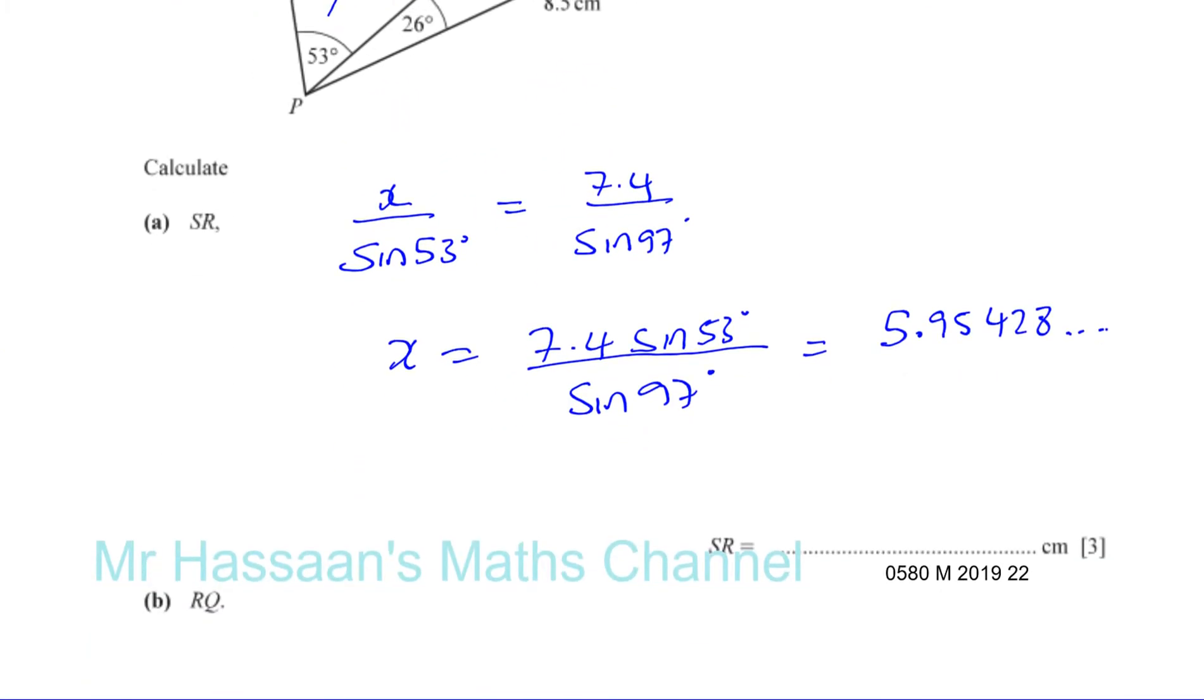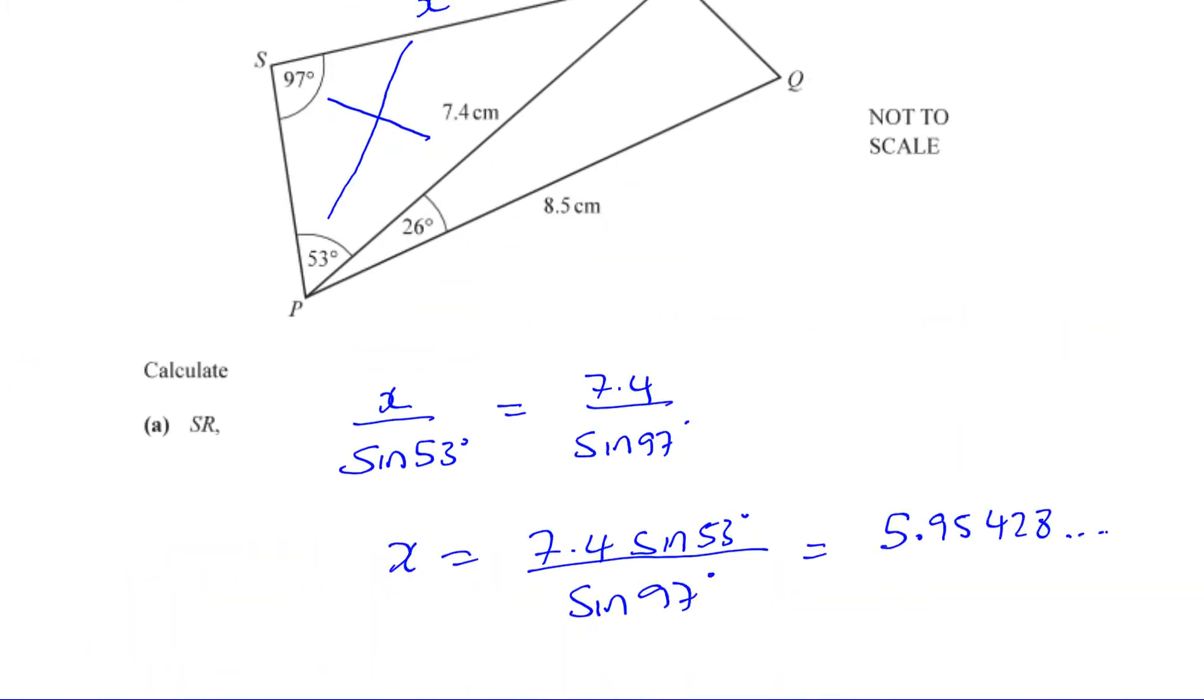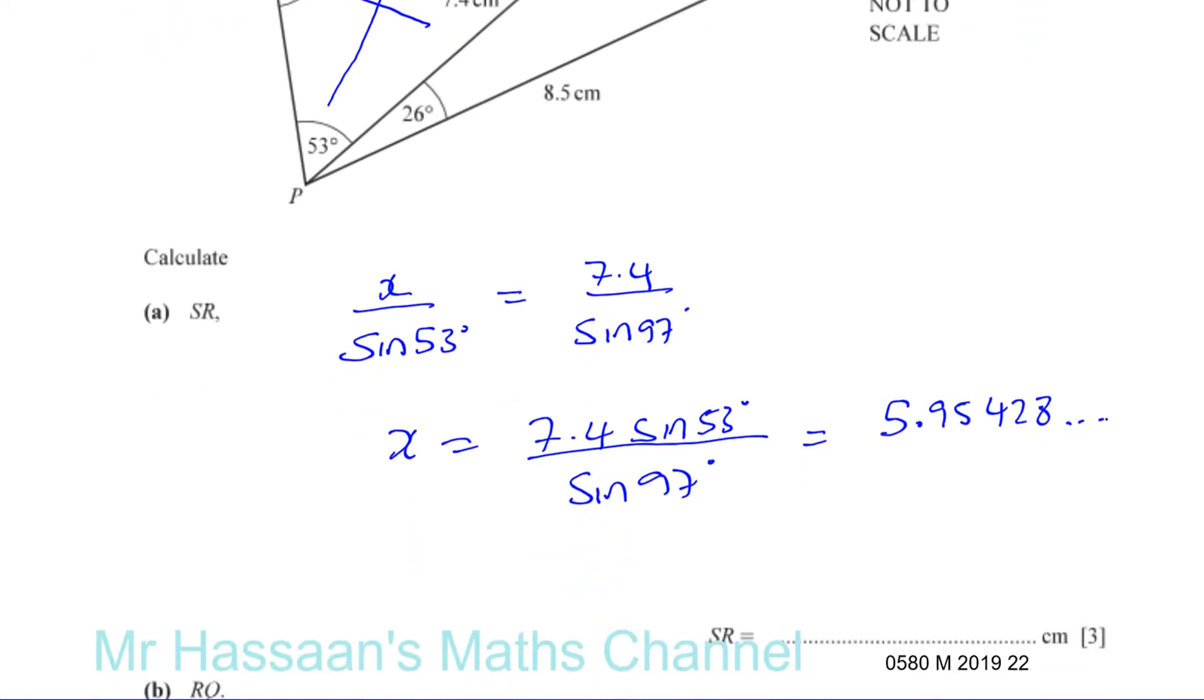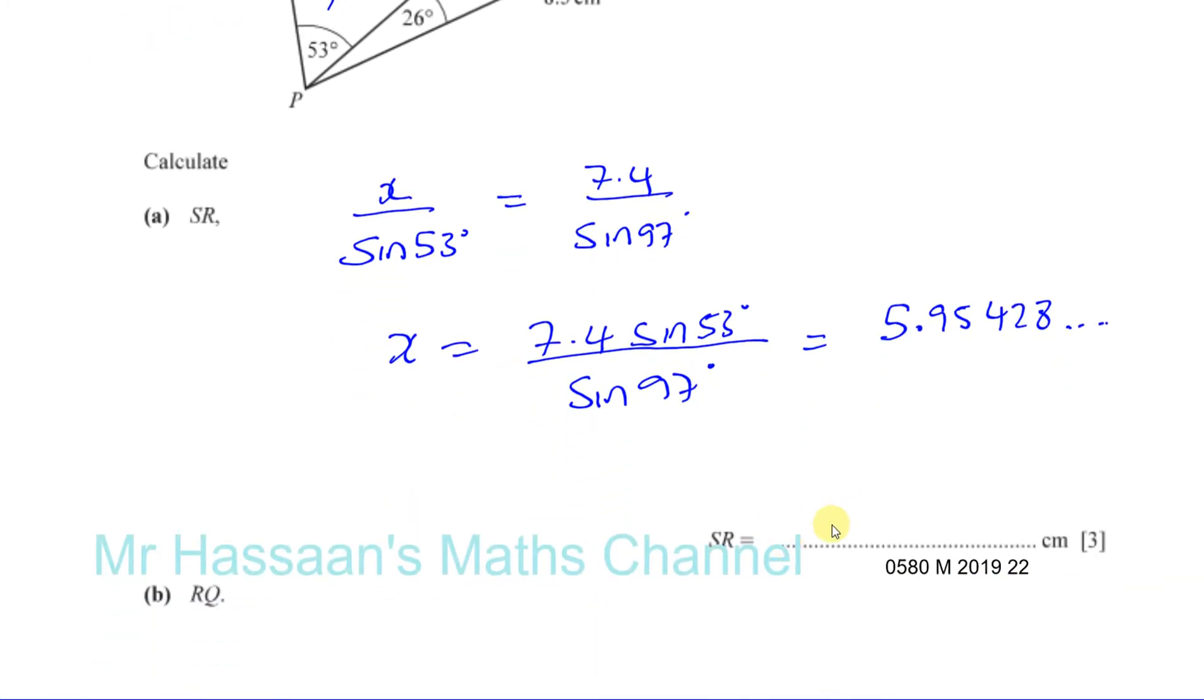Now what we need to do is round it. It doesn't tell us any information about how to round it, so we have to therefore round to 3 significant figures, which gives us 5.95 centimeters.